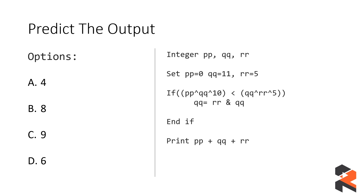Now let's look at another question — predict the output for the given pseudocode. The integers here are labeled with doubled names, so to avoid confusion I will label them as p, q, and r. First we set the values of p, q, and r. Before solving, I'd like you to pause the video, try it on your own, and then come back for the answer.